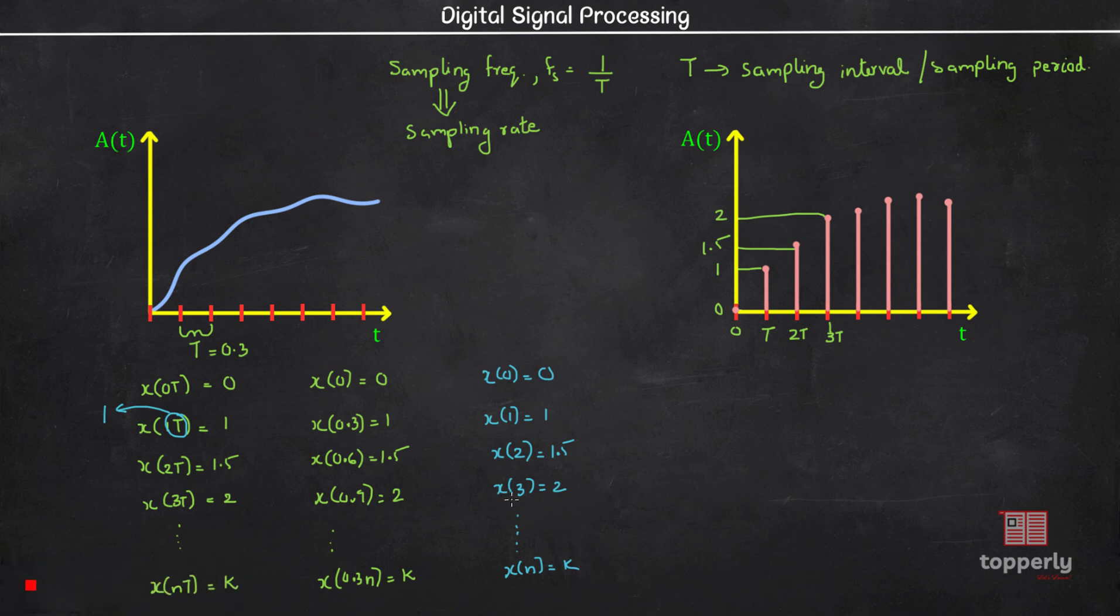Now this way of representing a sequence, that is writing x of 0 then the value of x of 0, x of 1 then the value of x of 1, etc. is cumbersome. There is another simple way of representation. This same sequence can be represented as x of n within curly brackets equal to 0, 1, 1.5, 2, etc. to k. We also provide an arrow mark at the position corresponding to n equal to 0, like this. This is the complete representation of the sequence of x of n for the given discrete signal.